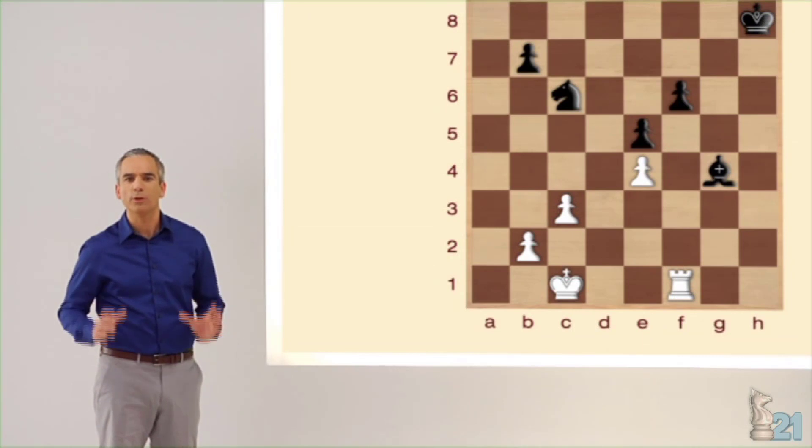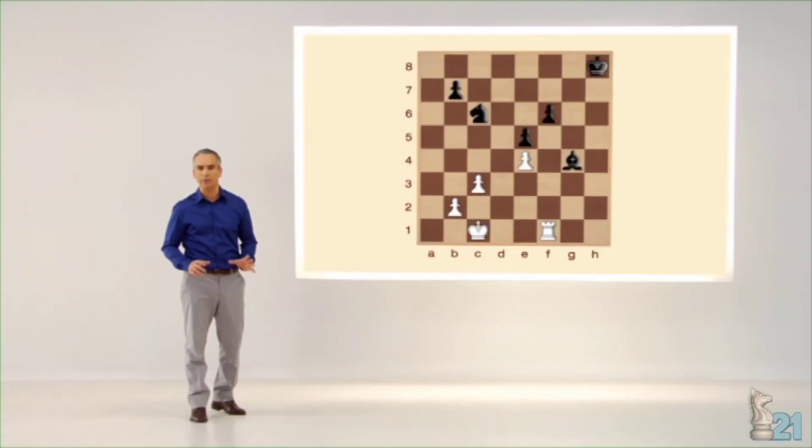Sigamos. En el tablero podemos observar un alfil desprotegido en G4 que aparentemente no podemos aprovechar. Si lo atacamos con la torre escapará sin problemas. Ahora bien, ¿se os ocurre una opción mejor?